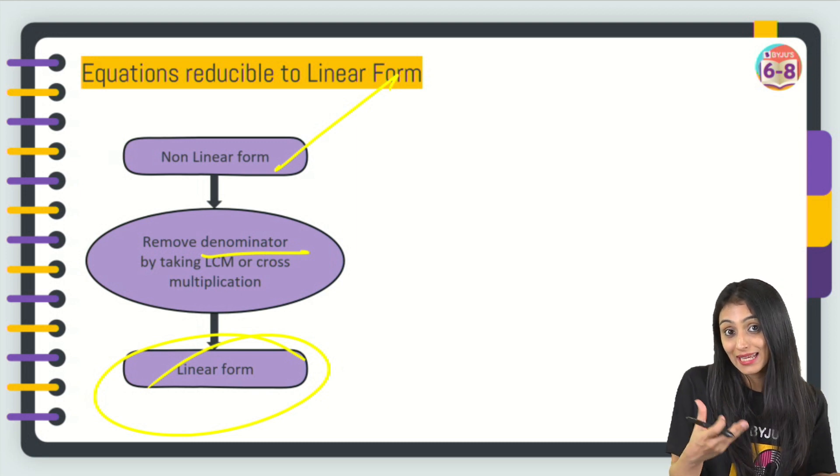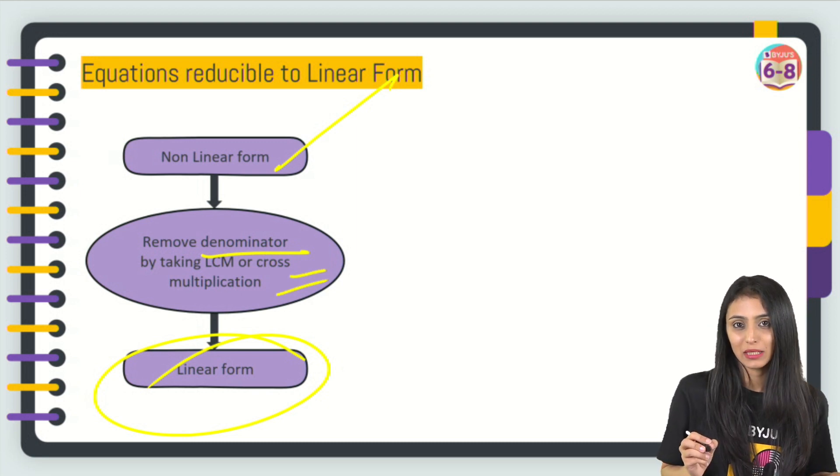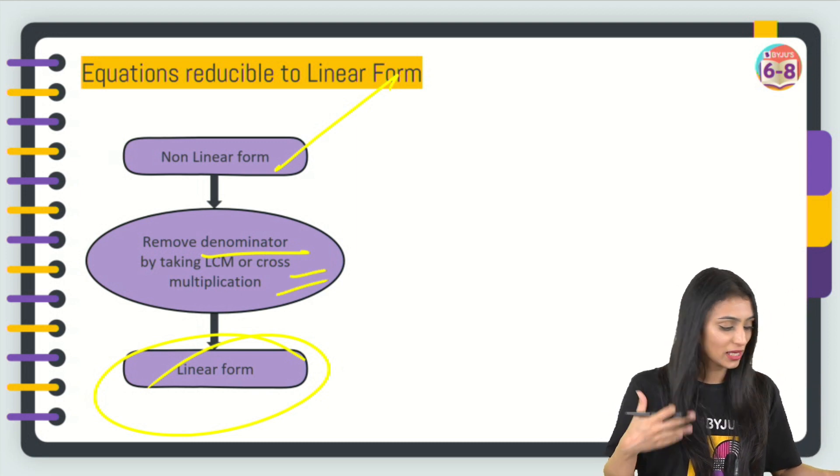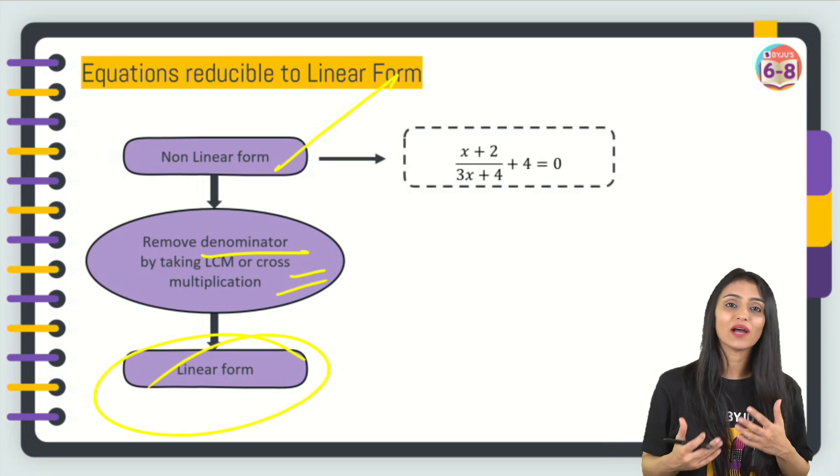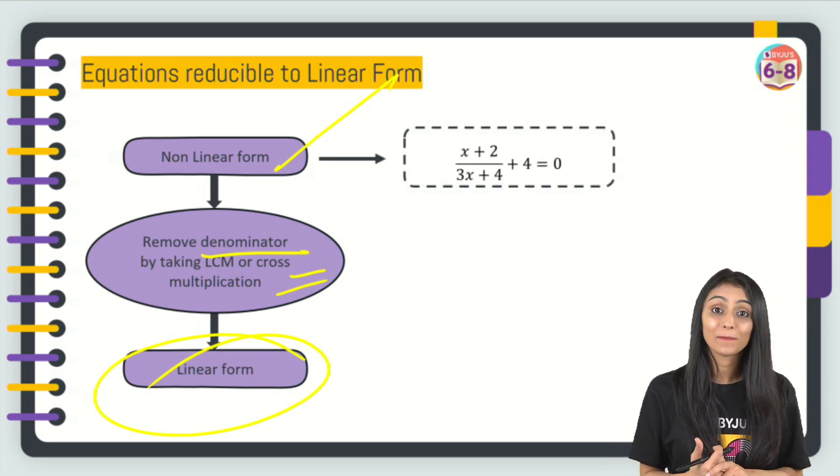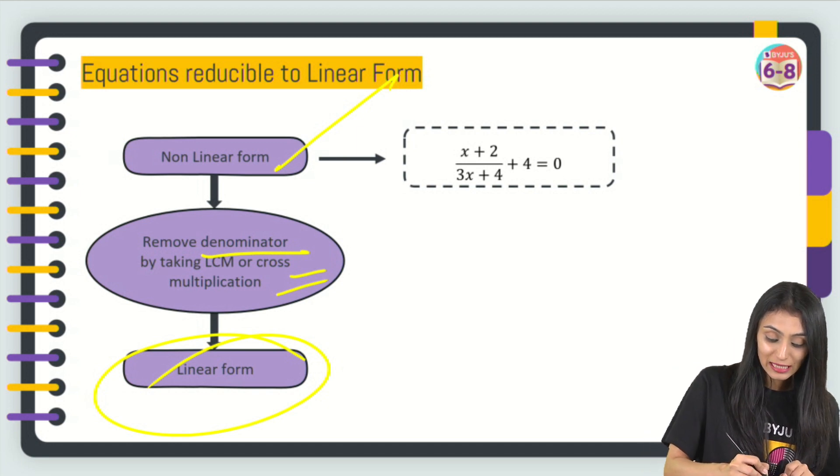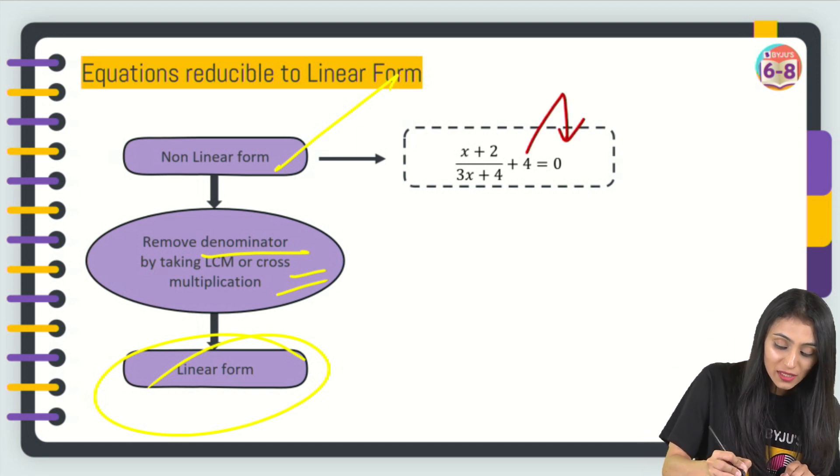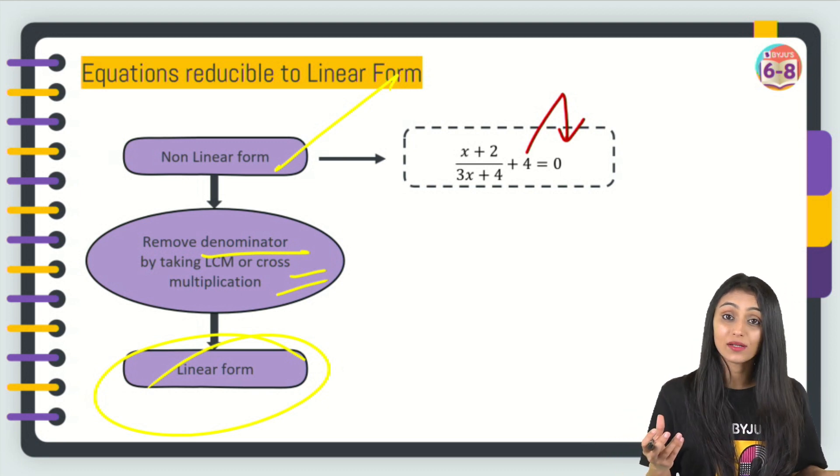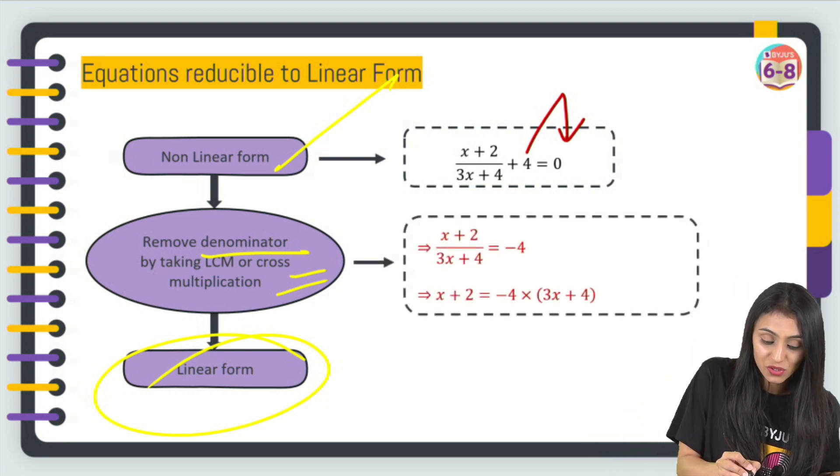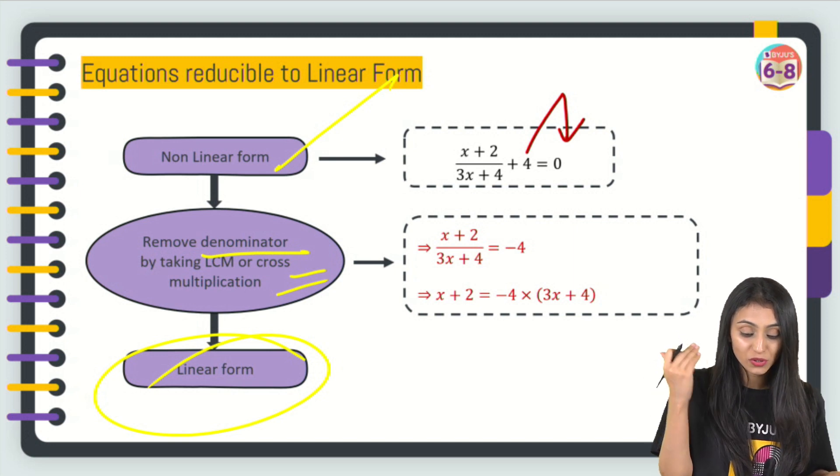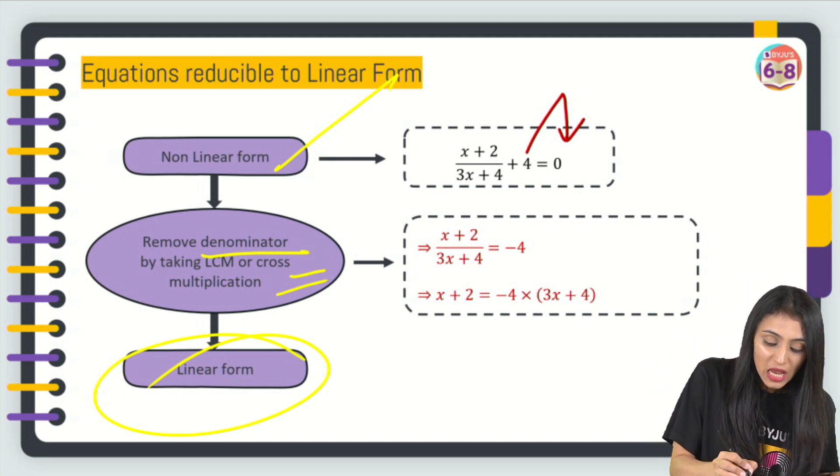Let me take an example so that you can understand this better. We have (x + 2)/(3x + 4) + 4 = 0. First, we can see that this is not in the linear form. What we will do is we will take this 4 to the other side. If I am taking it to the other side, the sign is going to get changed. It becomes (x + 2)/(3x + 4) = -4. Now we can cross multiply this so that it becomes linear.